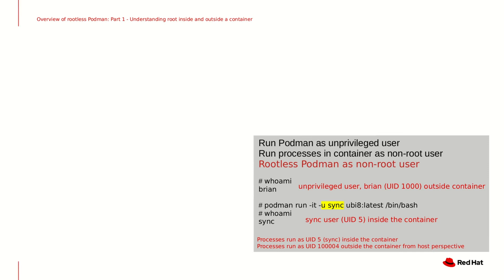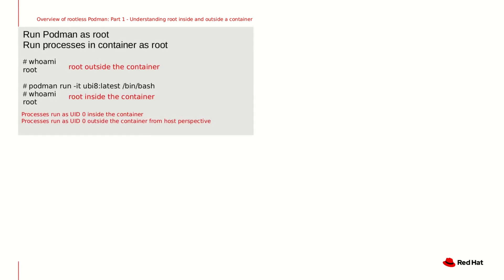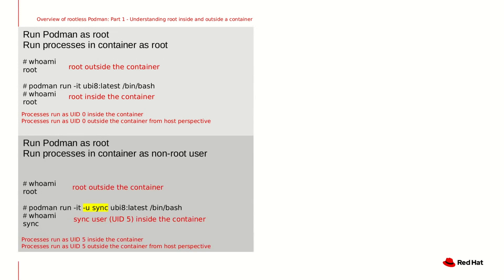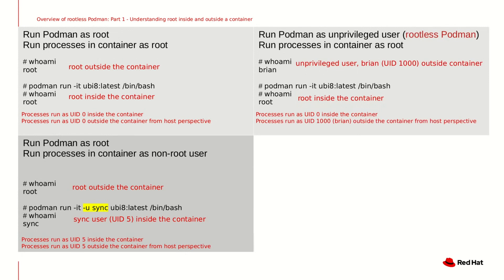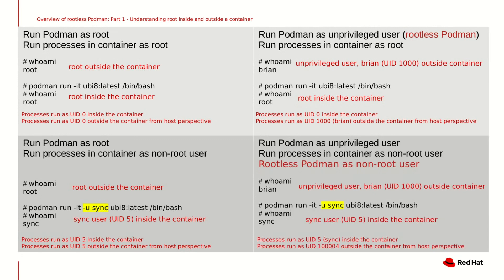UID maps and user namespaces are covered in much more detail in part 2 of the video. As a summary, we have four different options for how we can run containers: we can run Podman as root with processes as root inside; or run Podman as root with processes as a non-root user inside; or run rootless Podman as an unprivileged user with processes as root inside; or in the most ideal scenario, run rootless Podman as non-root, where both Podman is running as an unprivileged user and the processes running in the container are also running as an unprivileged user.